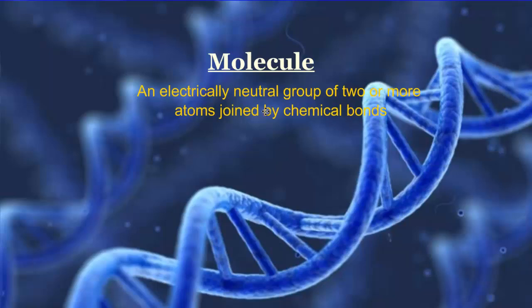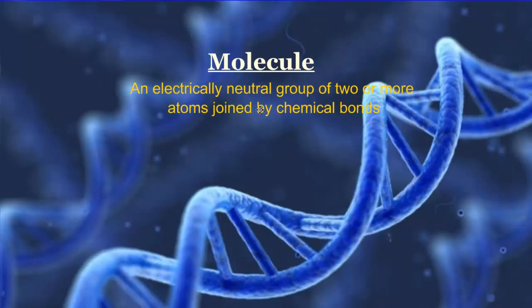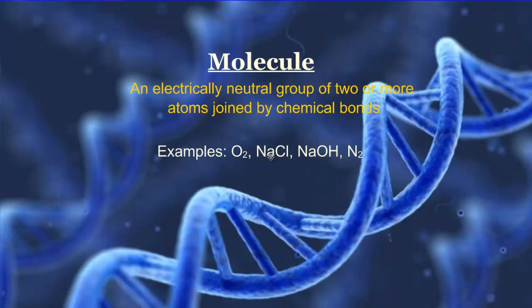From all this bonding we get a molecule. A molecule is an electrically neutral group of two or more atoms joined by chemical bonds. Some examples you'll encounter in biology are O2 — two oxygens hooked together — NaCl which is salt or sodium chloride, and NaOH.